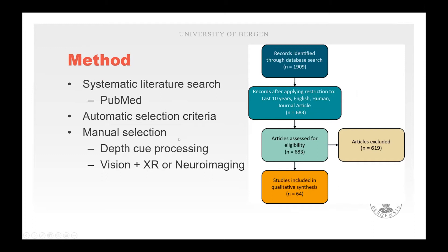For the survey we conducted a structural literature search in PubMed with a validation search in Google Scholar. Initially we identified 1,909 articles but narrowed it down to 683, then 64, through automatic and manual selection criteria based on the inclusion of stereopsis or vision plus XR, or vision plus neuroimaging in the abstract and content of the article.